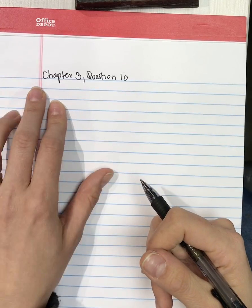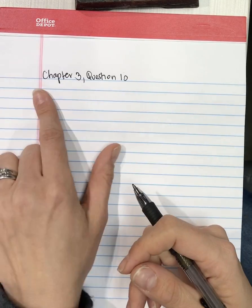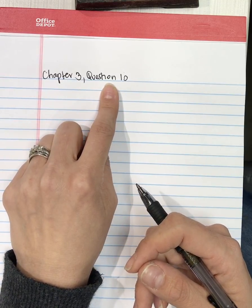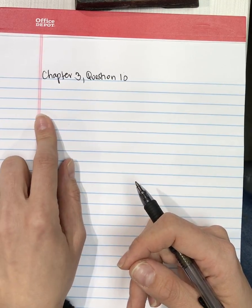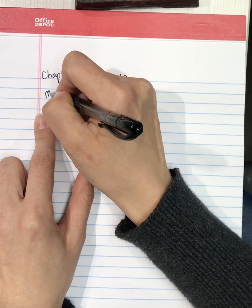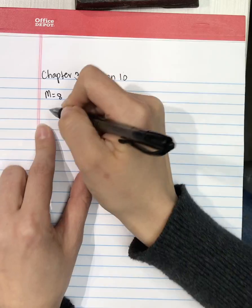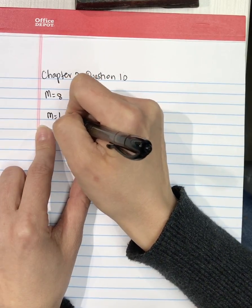This is a sample walkthrough of chapter 3, question 10. This question says one sample has a mean of 8 and a second sample has a mean of 16.